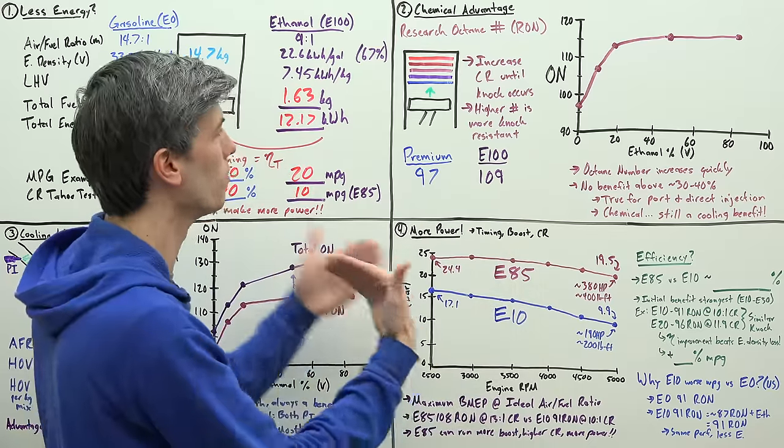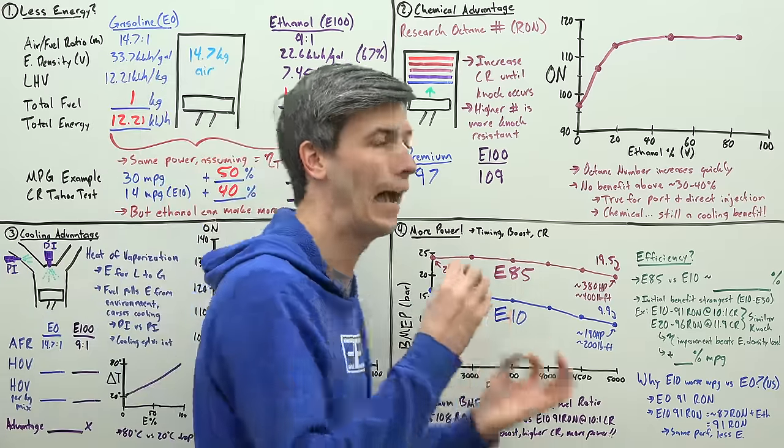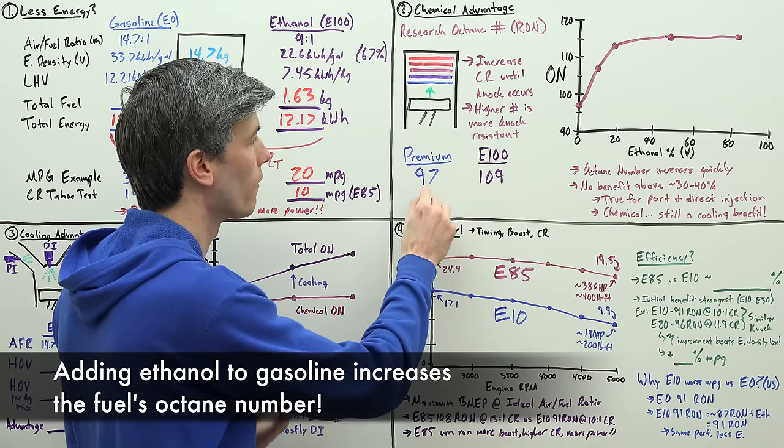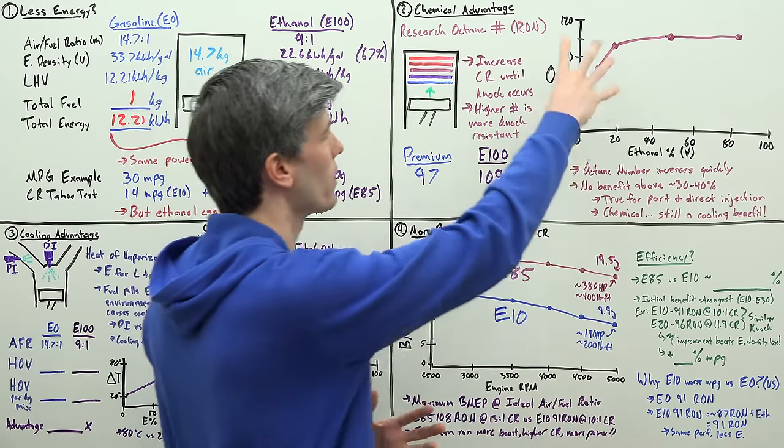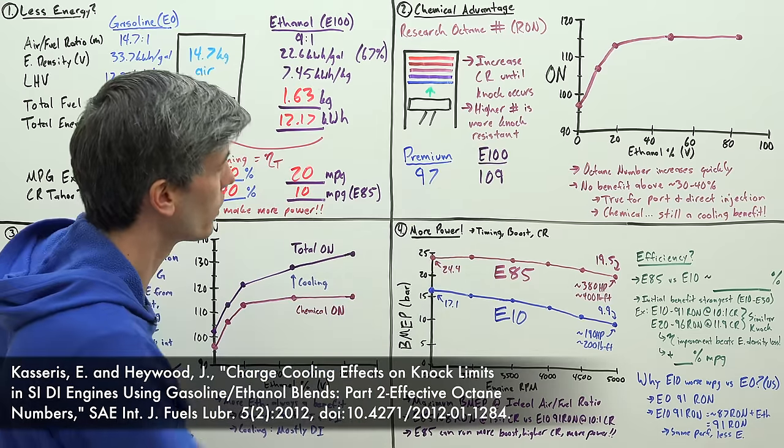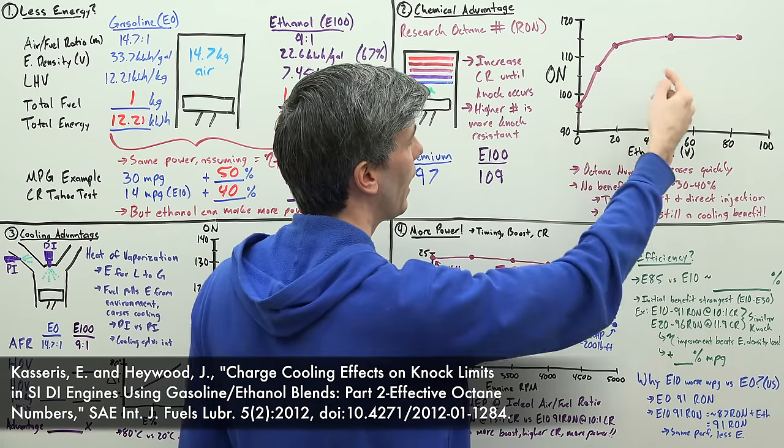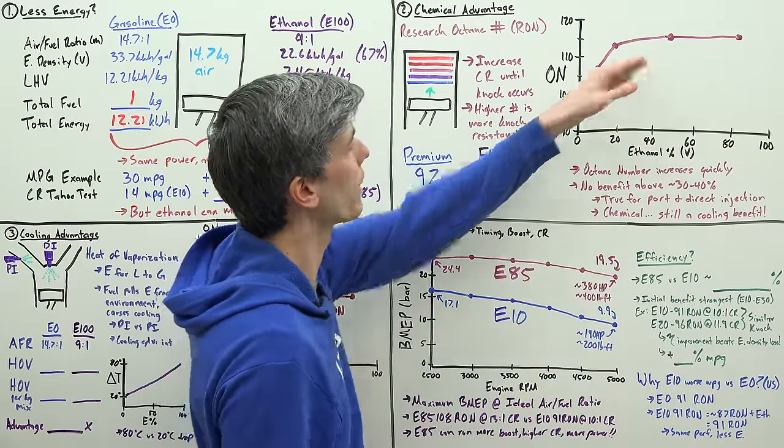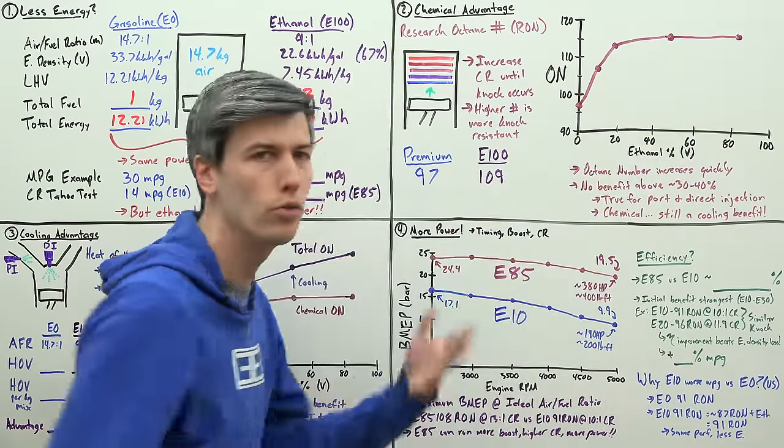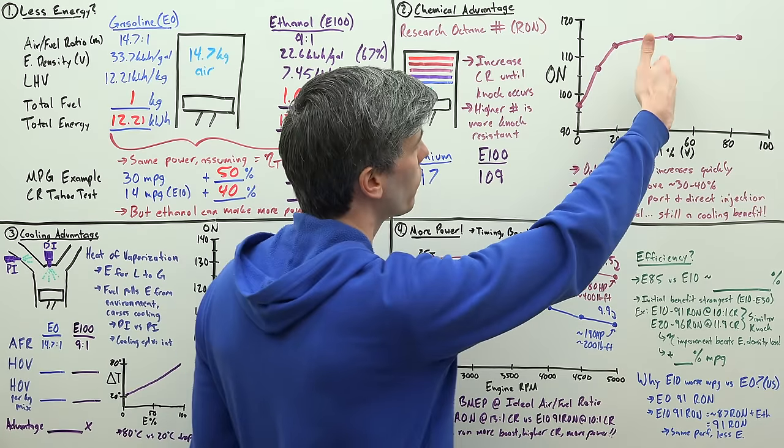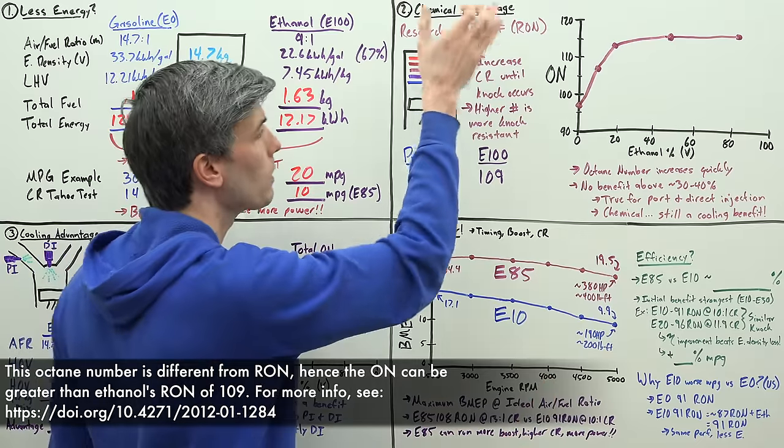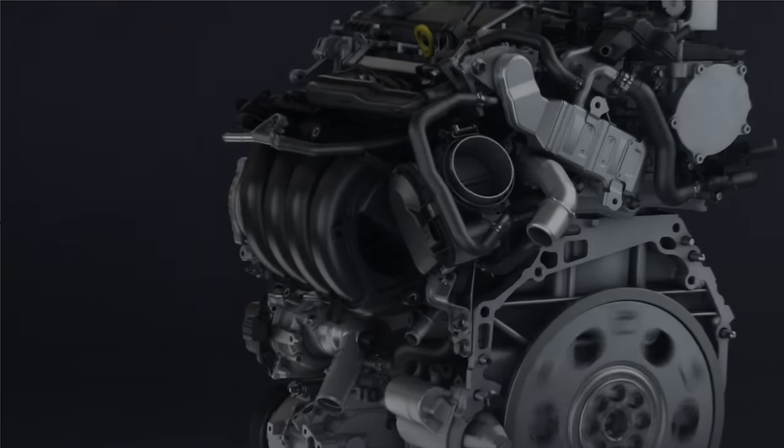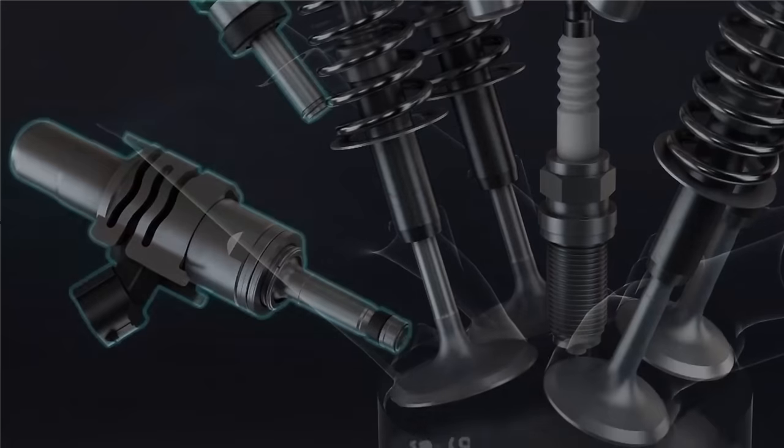Now as you start to add ethanol into gasoline, you increase the properties of gasoline to resist knock. So that's what this plot here is looking at from a study which I found super interesting. And what it shows is that as you start to add that ethanol, the initial increase in the octane number of the fuel is very dramatic. But then by about 30 to 40%, you no longer get any benefit from it. So after about 40%, there's no real benefit from a chemical standpoint of adding ethanol into gasoline to increase that octane number. Now whether you're using port injection or direct injection, this advantage exists because it's purely a property of the fuel itself.